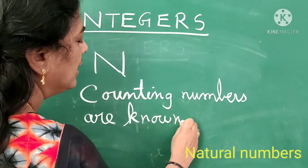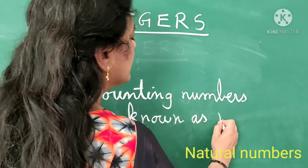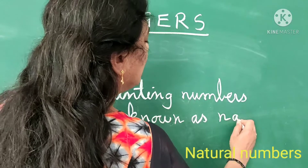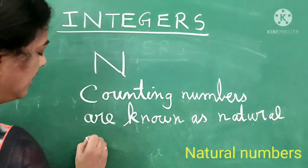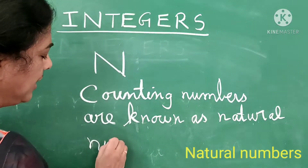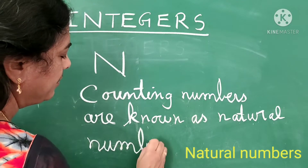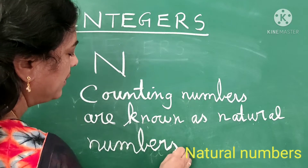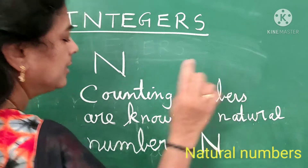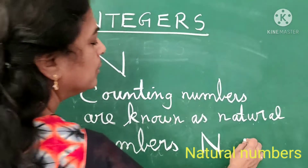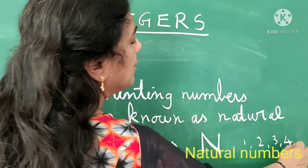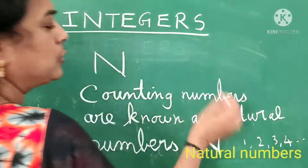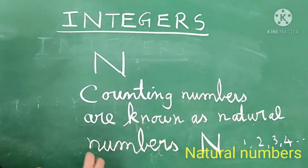Natural numbers are denoted as capital N. The set goes 1, 2, 3, 4 — numbers are countless, that is infinite. This set is known as natural numbers.